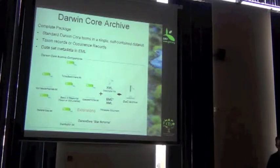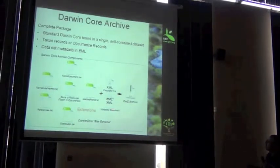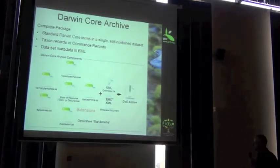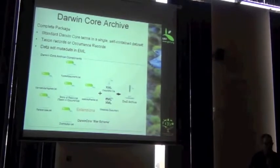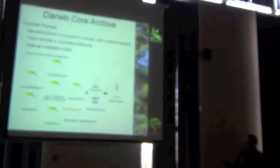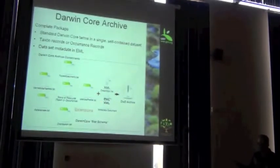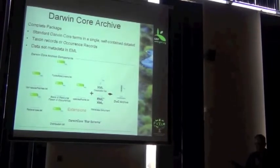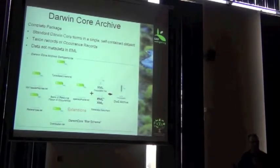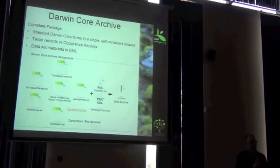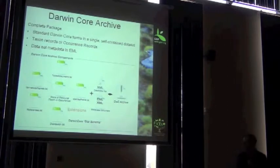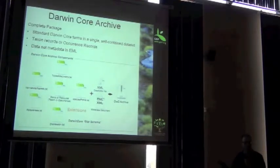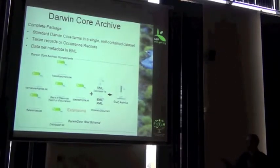So here's the complete package. In the middle you've got your core file, either taxon or occurrence. Then you've got your metadata document. You've got a descriptor file which handles the mapping of your columns to Darwin Core terms. And the final result is a compressed, zipped Darwin Core Archive.